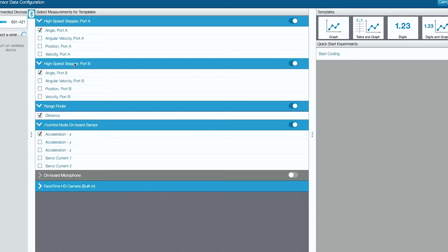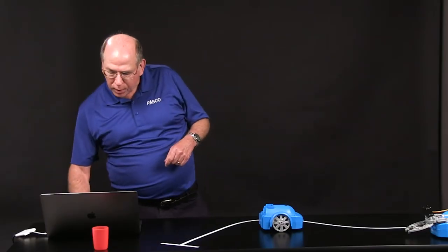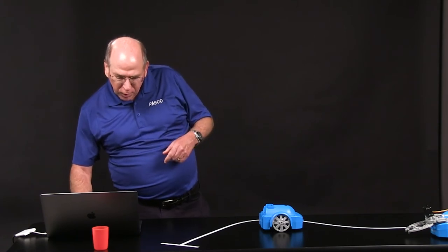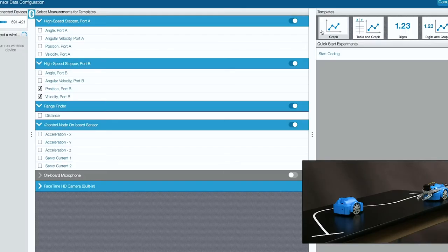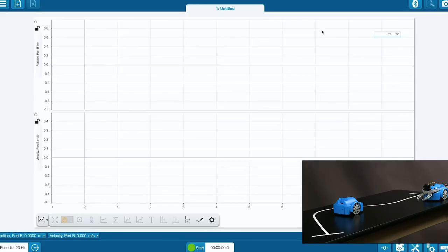First we need to connect it to SparkView. On the bottom here is a power button. Now I've got the Bluetooth activated. Over here is SparkView. We could use Capstone as well. I'm going to connect to the control node, which is the brain of the PASCO Bot. The first thing I see are all these things I could get data from. I can get the angle and angular velocity, position and velocity of each of the stepper motors on the wheels. I can get the distance from the range finder. I can get the acceleration from the built-in accelerometer and the servo current. In this case, I'm going to pick the position and velocity of the left stepper motor because that will give me positive values when it's going forward, which seems to make sense. I'll uncheck everything else here. Let's make a graph.